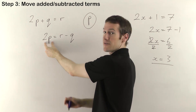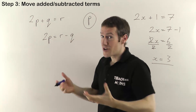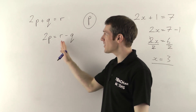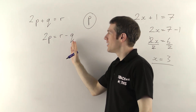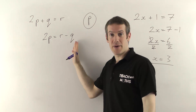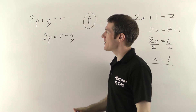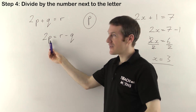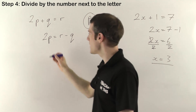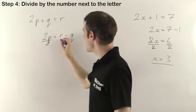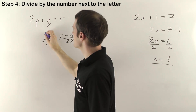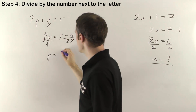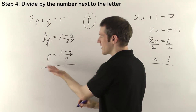Now we've got all our p's — the letter we want — by themselves on one side, and all the other letters on the other side. For the normal equation we had to work out what 7 minus 1 gave us, but for transposition it's actually easier because you don't need to work this out — you don't know what r or q are, so you just leave it. Next, divide by the number next to the letter we care about — that's p — so divide everything by 2 on both sides. Those 2s cancel, leaving p by itself. Just leave the fraction as it is; don't try to cancel or mess around with it.